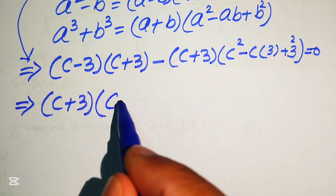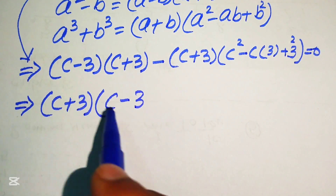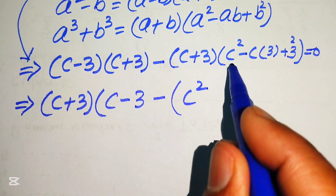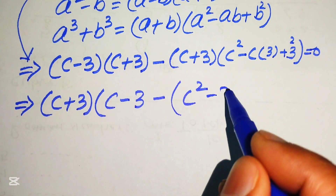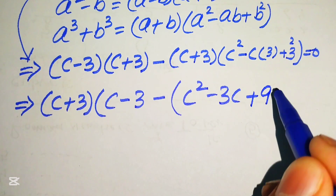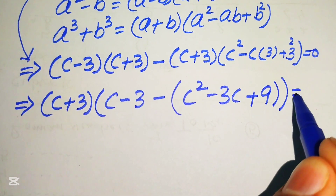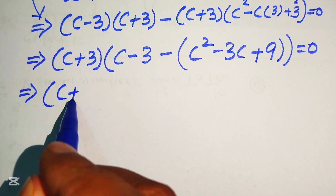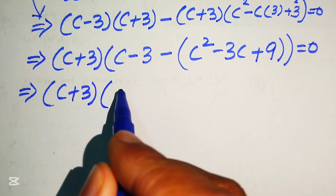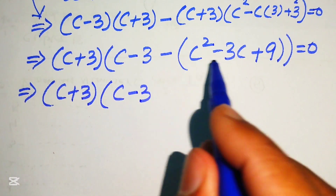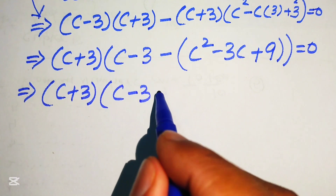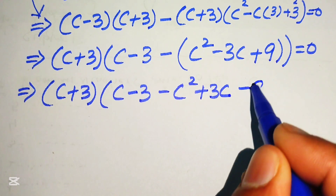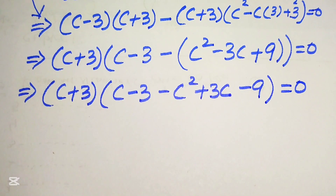Taking (c plus 3) common, the remaining terms are: from the first part we get (c minus 3), and from the second part we get minus(c squared minus 3c plus 9), all equal to 0. Rewriting, we have (c plus 3) times (c minus 3), then distributing the negative sign gives minus c squared plus 3c minus 9, and this whole expression equals 0.